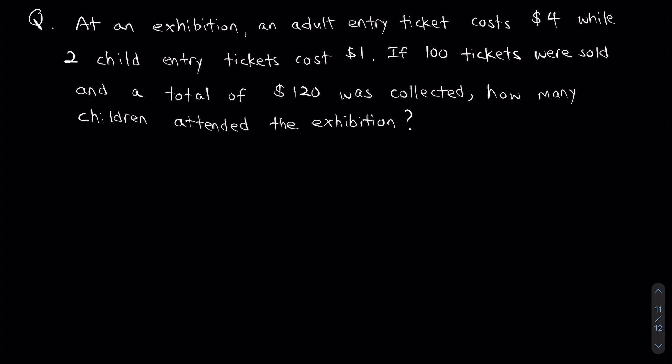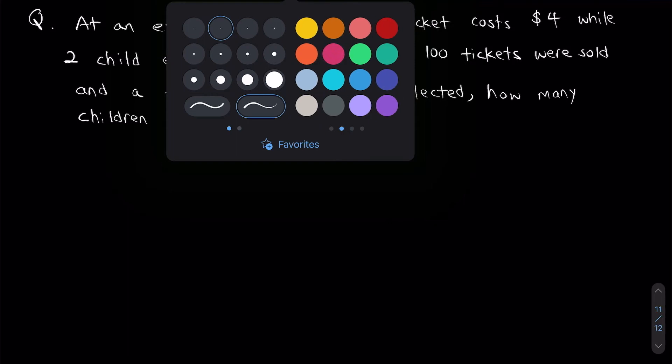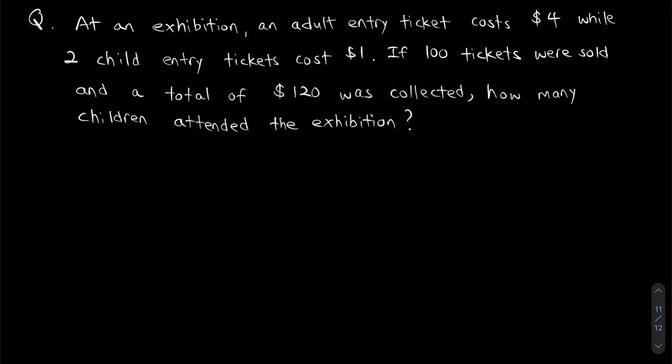Now let's think. If we were dealing with a chicken and rabbit question, how would we go about doing it? Well, there are probably 2 ways. The first is guess and check, which is really long-winded and not recommended. The other, much faster way would be the method of assumption. Since this question is just another type of chicken and rabbit question, we can do this question by assumption too.